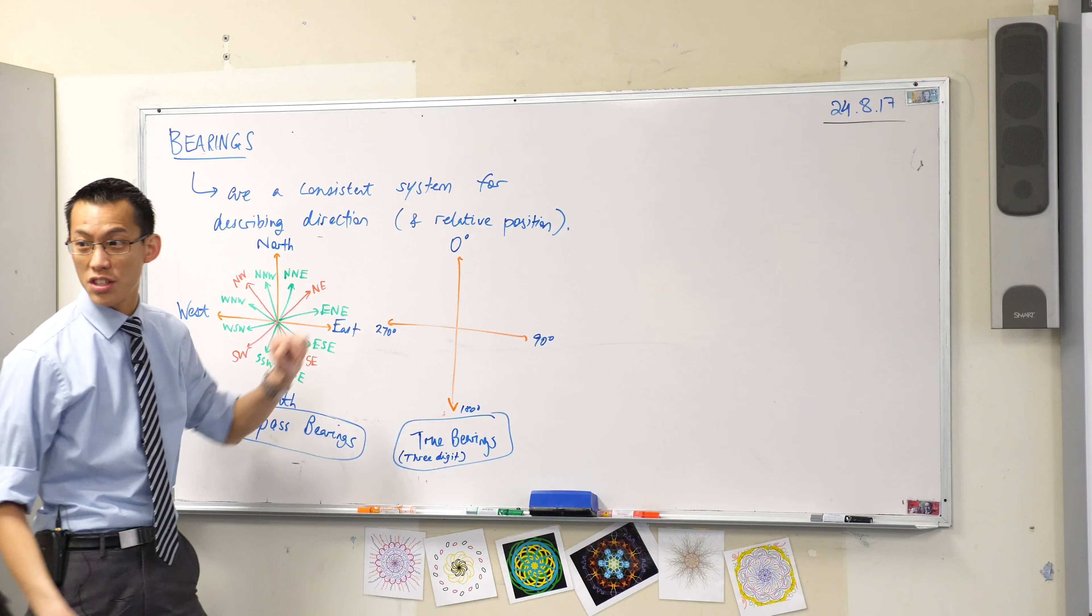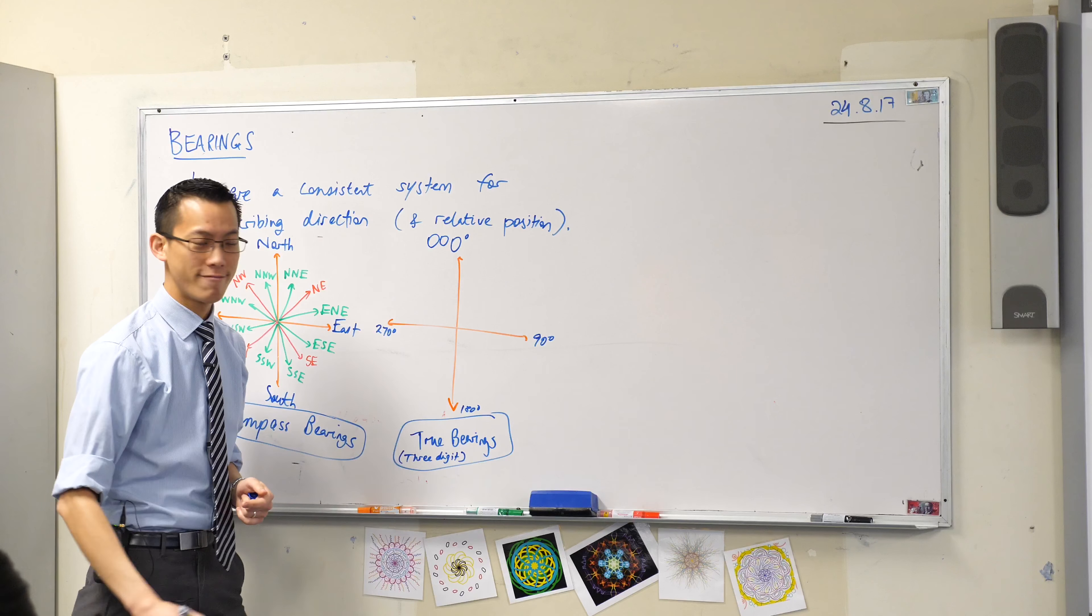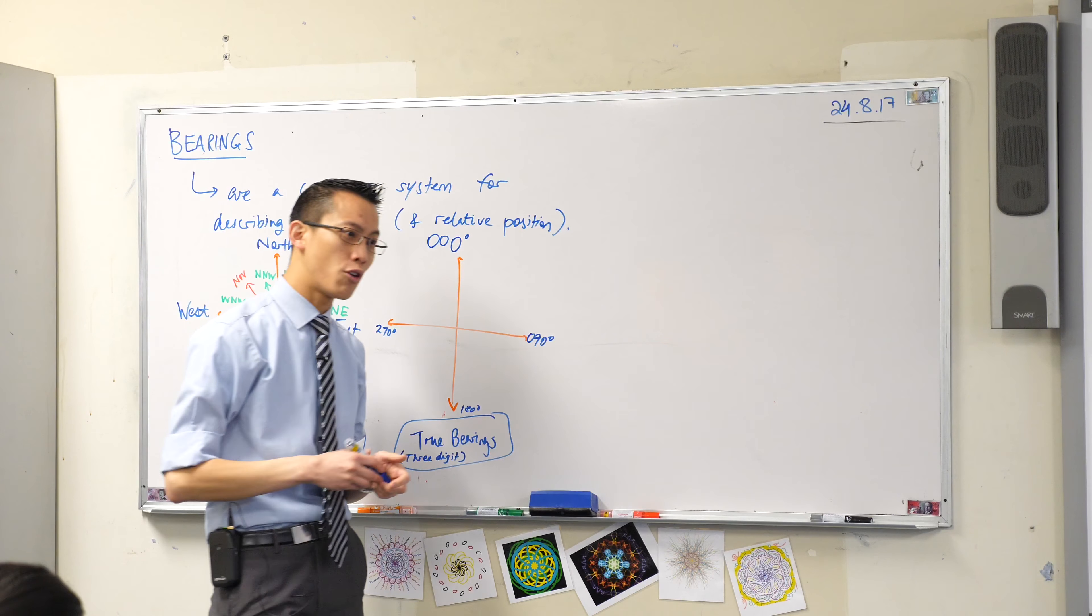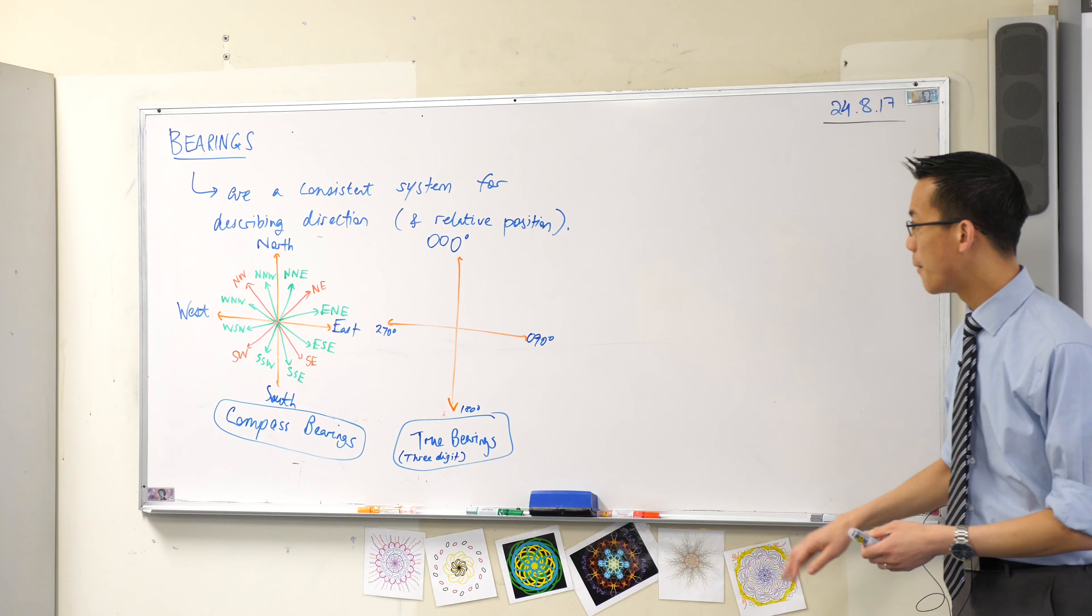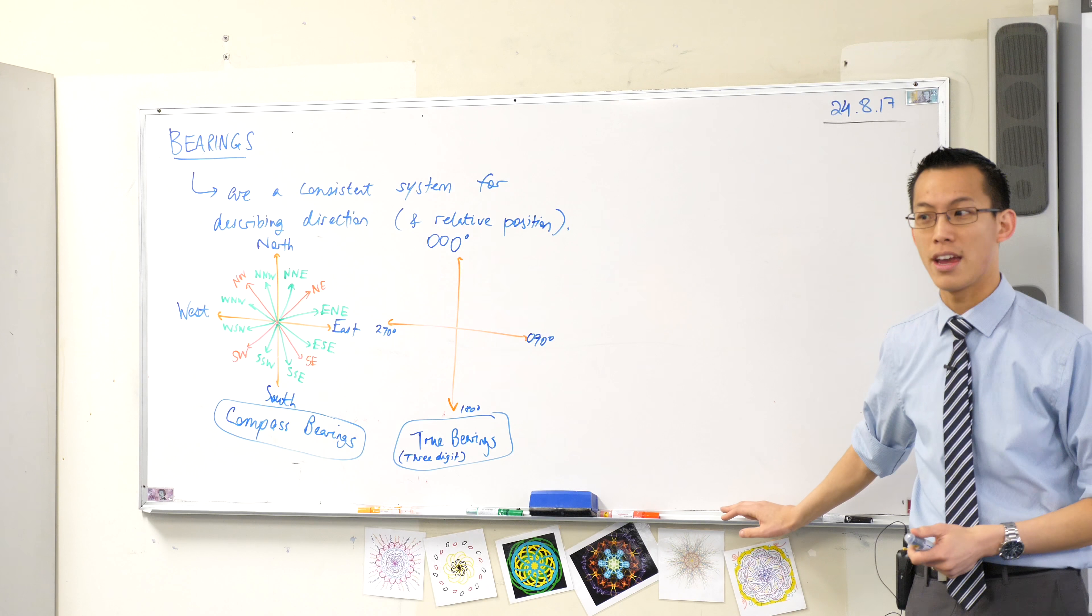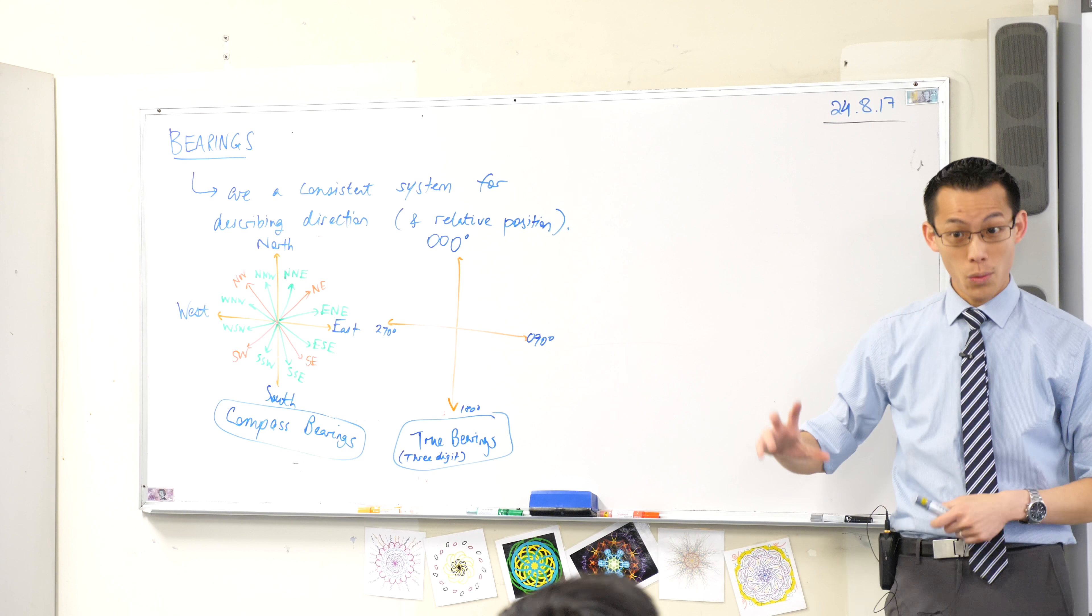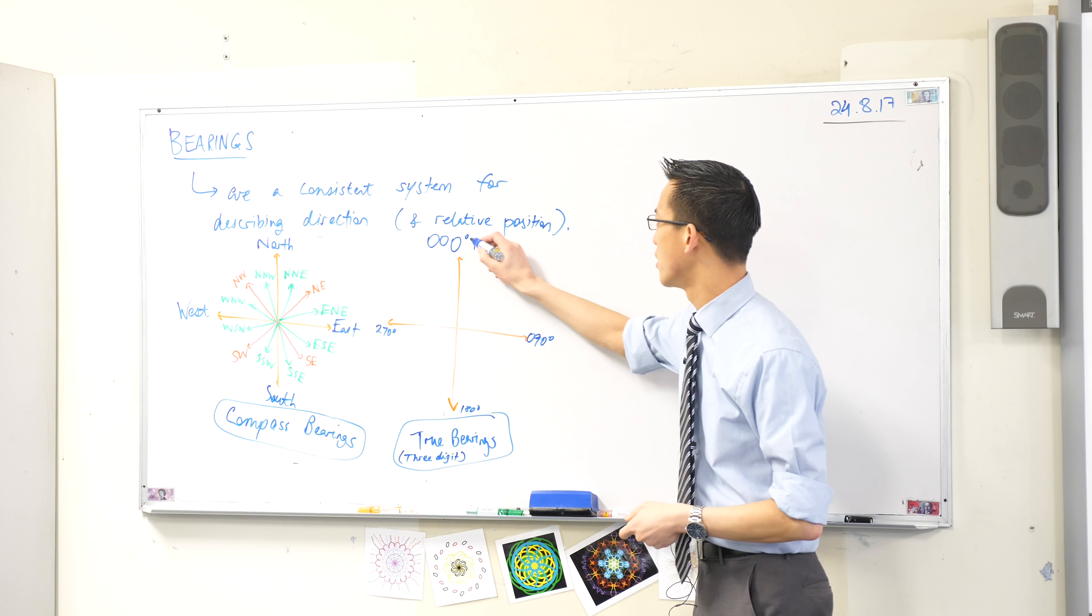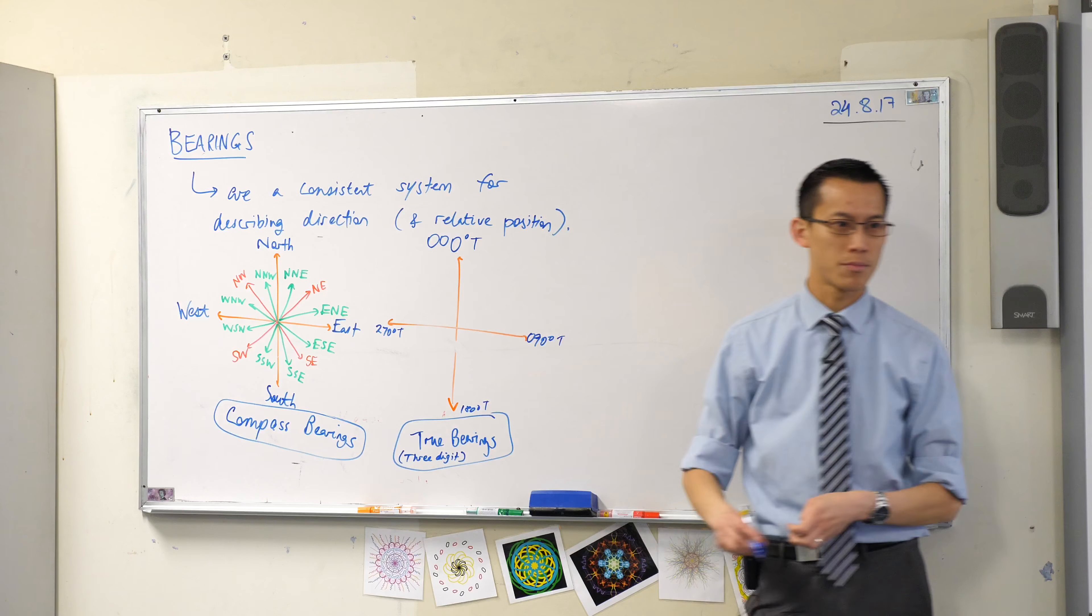These are often called three-digit bearings, and in fact to make that official, we actually often write them, even when they're less than three digits, we write them with three digits like that. If you recall back from when you first encountered 24-hour time, we do the same thing with that. You don't say 700 hours, you say 0700 hours. One last little thing: because they're called true bearings, they often are written with a T afterwards, which indicates true.